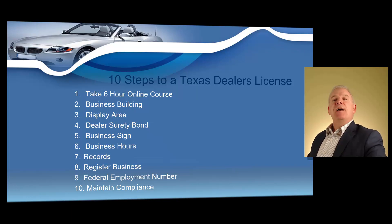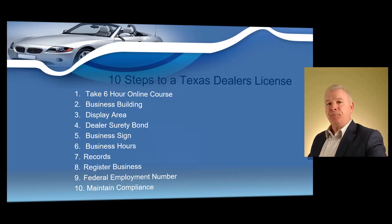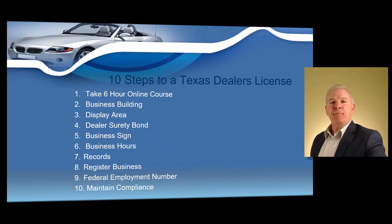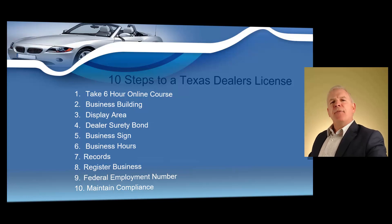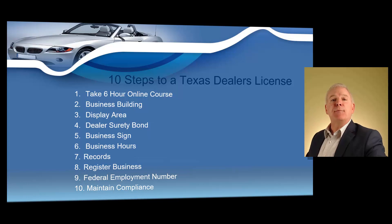Step number three: display area. You must have a display area with sufficient space to display at least five of the vehicle types you will be selling. The display area must be at the same address as the building that houses your Texas dealer's license and may be on the outside or inside of the building. You must ensure that your vehicle inventory is separate from any neighboring businesses' customer parking. The display area must also have adequate lighting if you're going to conduct business at night.